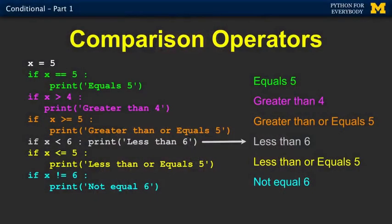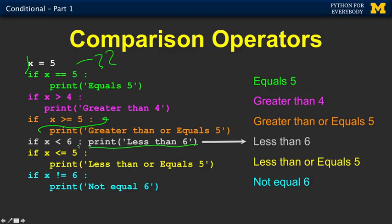None of these comparison operators harm the data they're looking at — they evaluate and return true or false. For x equals 5, they're all going to be true. If x equals 5 — remember that's the question mark form. If x is greater than 4, print 'greater than 4'. If x greater than or equal to 5, that's also true. You can also pull the body up to the same line if it's only one line. If x less than 6, print 'less than 6'. If x less than or equal to 5, print it. If x is not equal to 6, print. You see this pattern of indent, end of indent, repeated throughout.